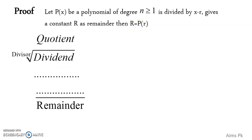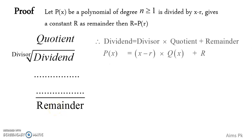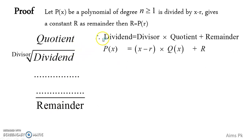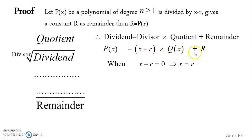We have a dividend, which is our polynomial, and we are dividing it by a divisor, which is a linear polynomial. As a result, we get a quotient and a remainder. The Remainder Theorem gives you the direct process of getting the remainder without long division. If you write the long division as: dividend equals divisor times quotient plus remainder, your result will be P(x) equals (x minus r) times Q(x) plus R.